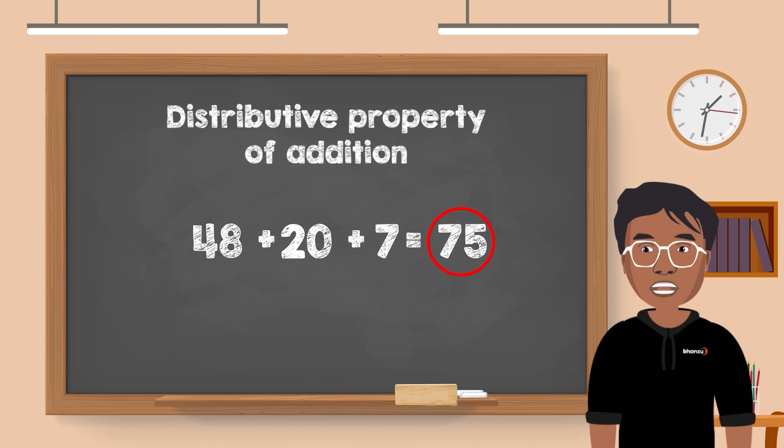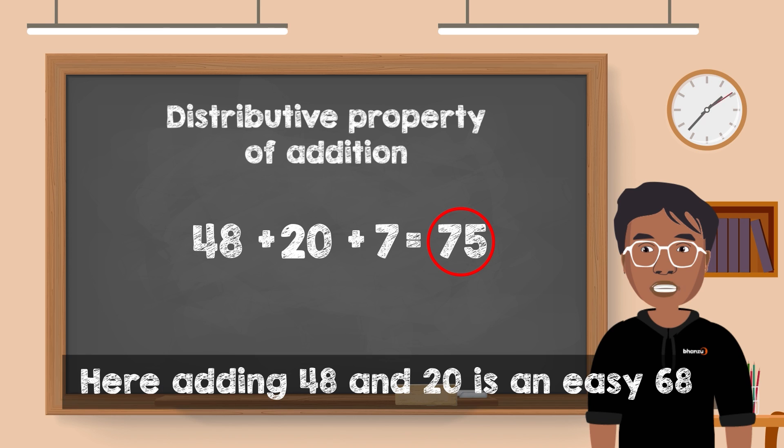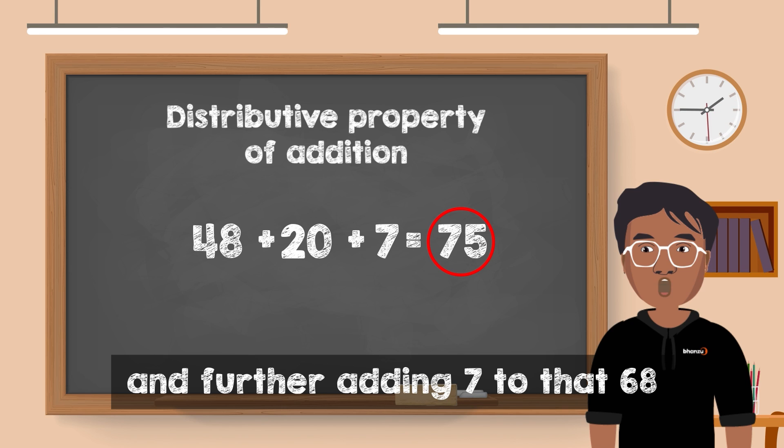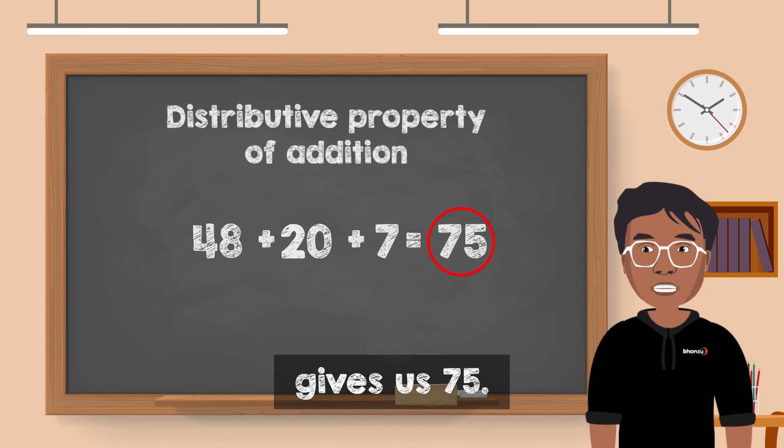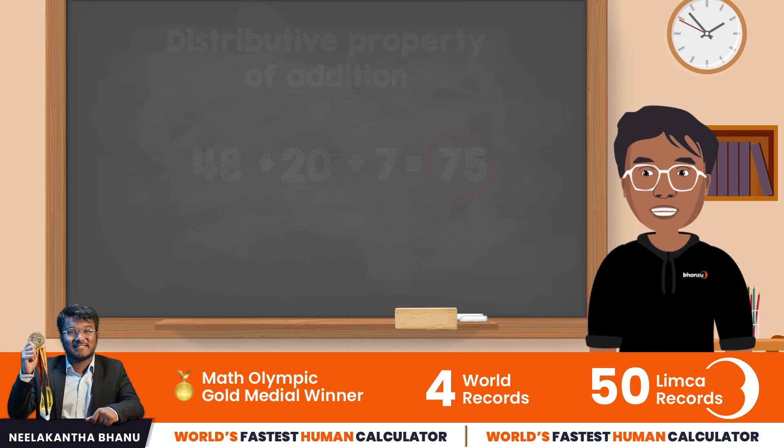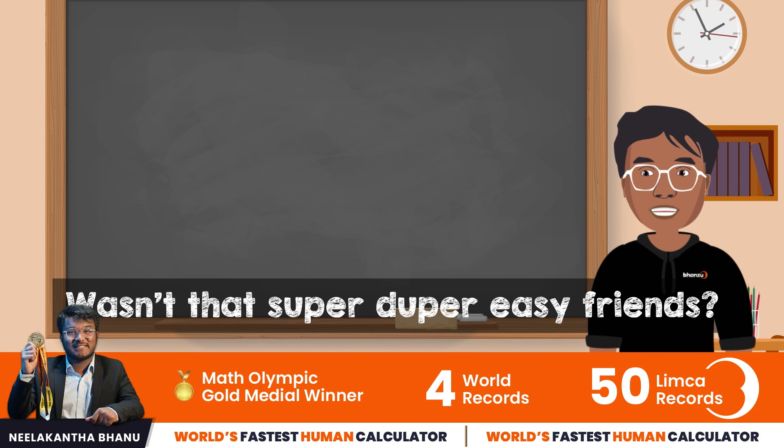Let's take 48 plus 20 plus 7. Here, adding 48 and 20 is an easy 68, and further adding 7 to that 68 gives us 75. Wasn't that super duper easy friends?